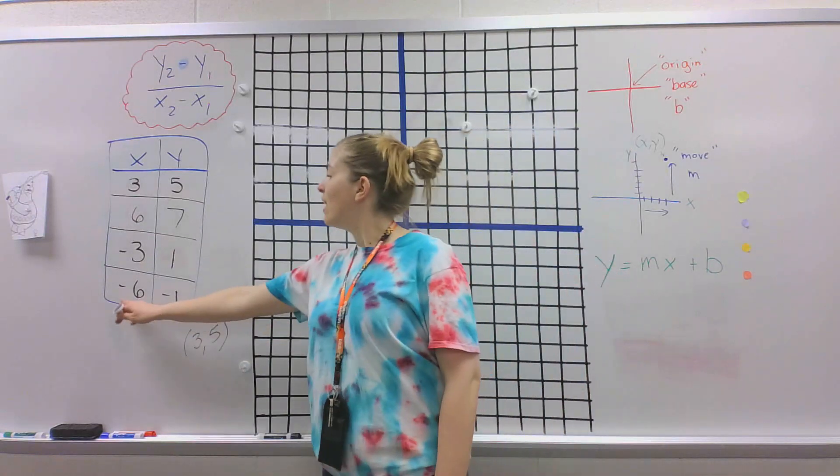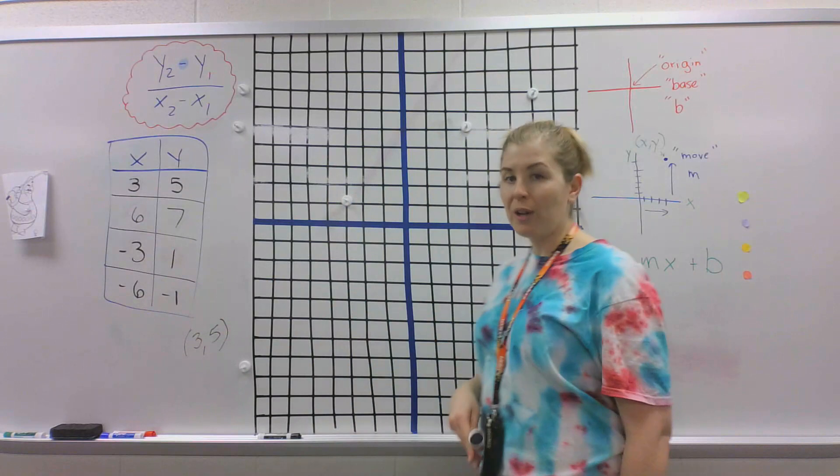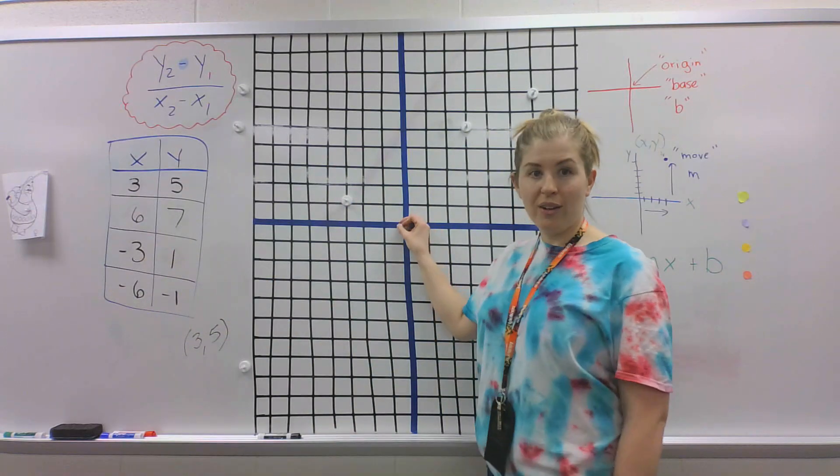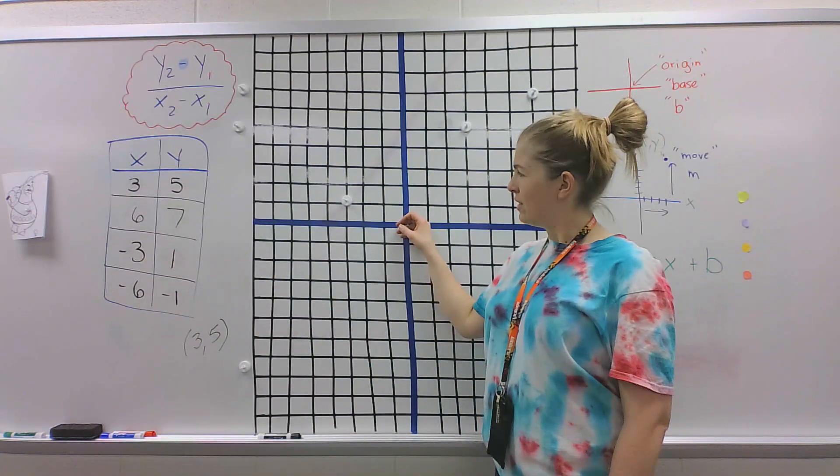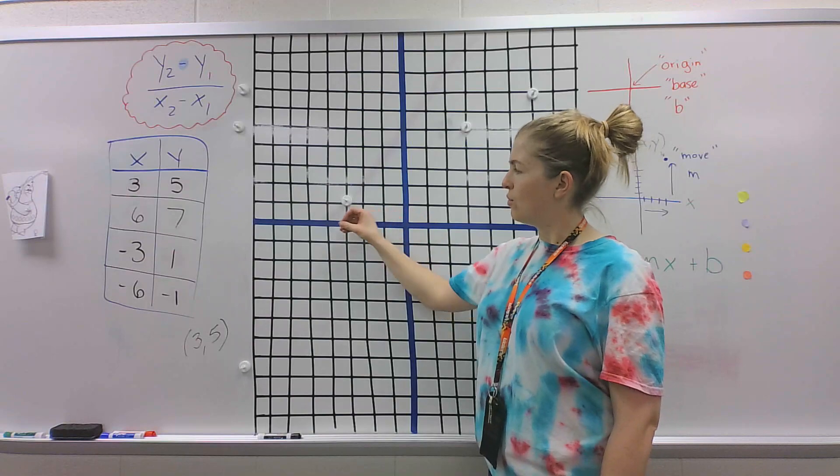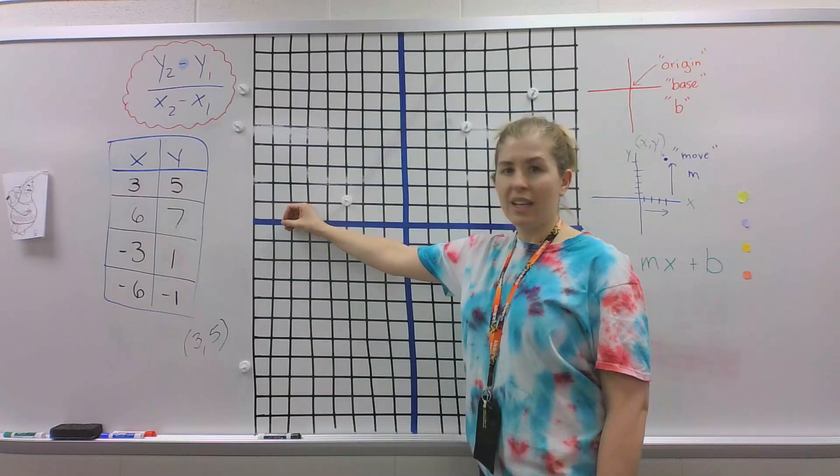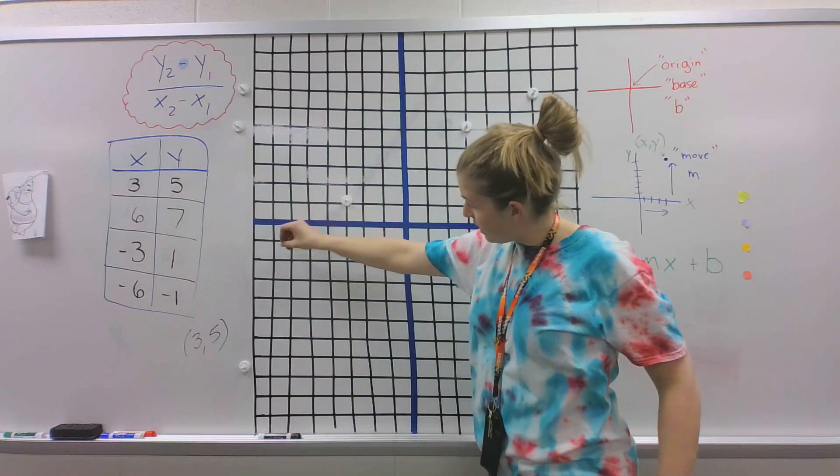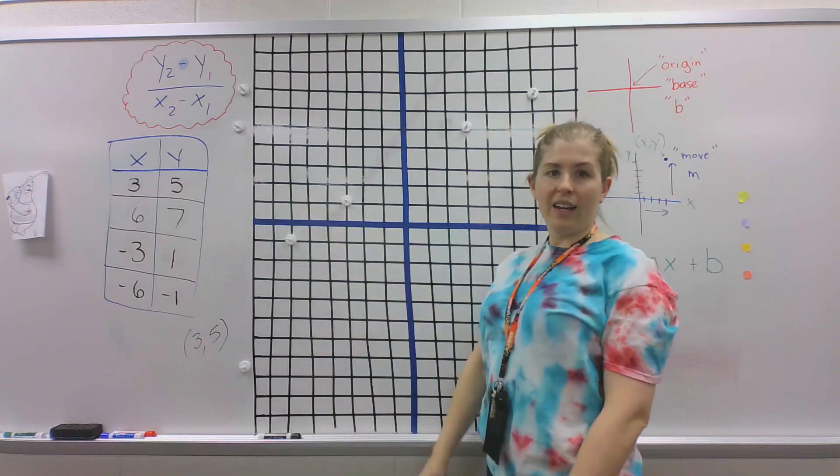And then last, we have negative 6 and negative 1. So now, oh, negative 6. 1, 2, 3, 4, 5, 6. And a negative 1. Sounds like we're going down. All right.